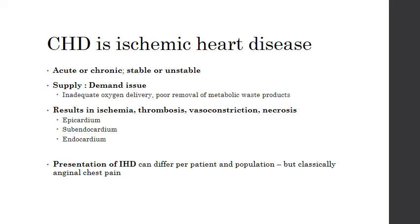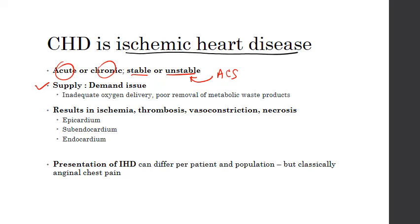As a review from the previous lecture, CHD is an ischemic heart disease, and this can be classified in a number of different ways. Clinically, we identify this as acute or chronic, or stable versus unstable. When we think of unstable, what we're thinking of is ACS. This really boils down to a supply-demand issue of oxygen and nutrients to the tissue. If there's inadequate oxygen delivery or poor removal of metabolic waste products, we have a problem that can result in tissue necrosis.